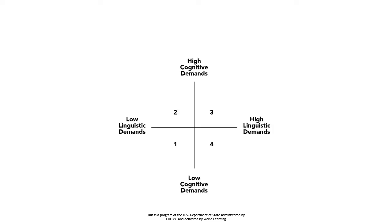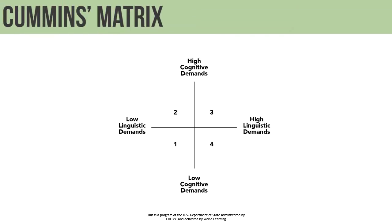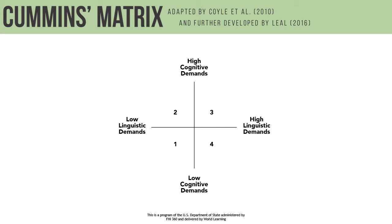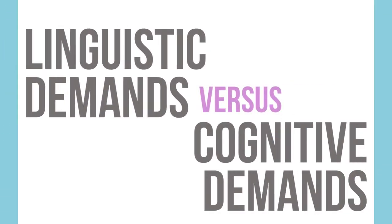To help us think about this, we can use this matrix. This matrix was originally proposed by Cummins, adapted by Coyle et al., and then even further developed by Leal. This matrix is divided into four quadrants and helps us separate task difficulty that is associated with content versus task difficulty that is associated with language.